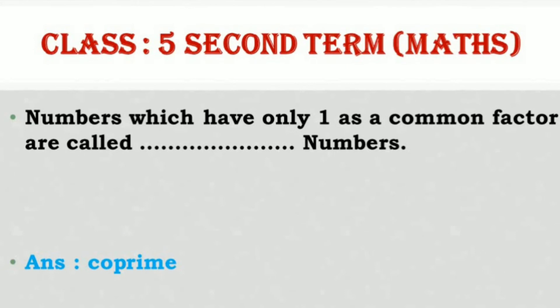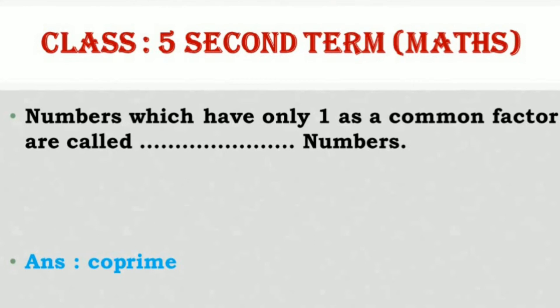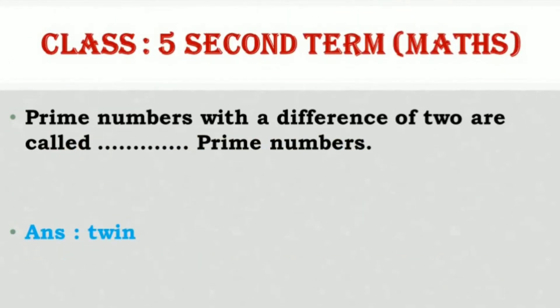Numbers which have only 1 as a common factor are called co-prime numbers. Prime numbers with a difference of 2 are called twin prime numbers.